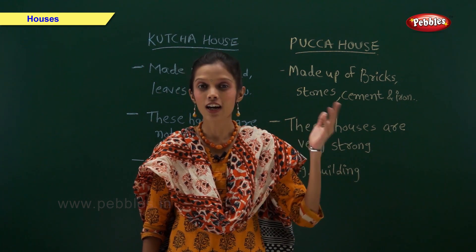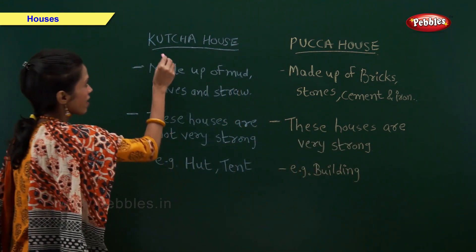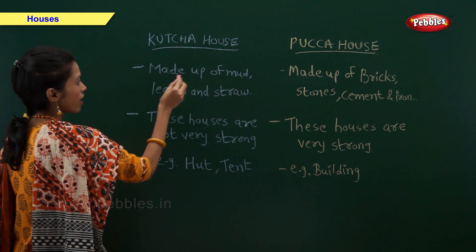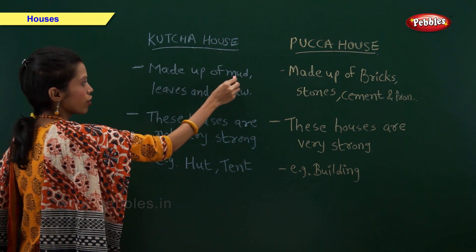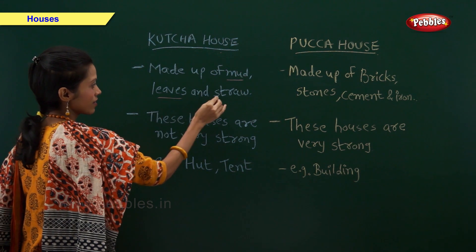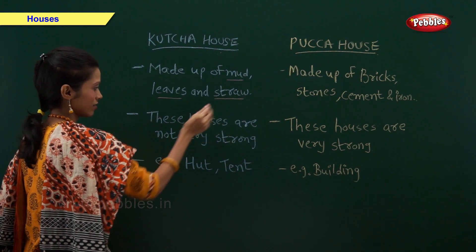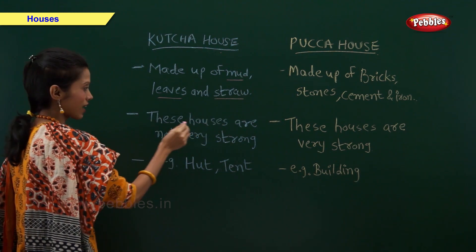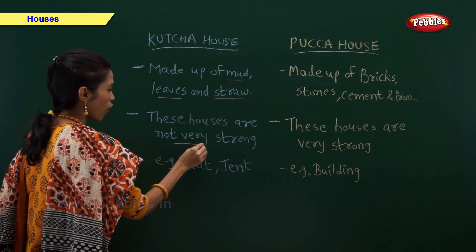First, Kaccha house. A Kaccha house is made up of mud, leaves and straw. These houses are not very strong.